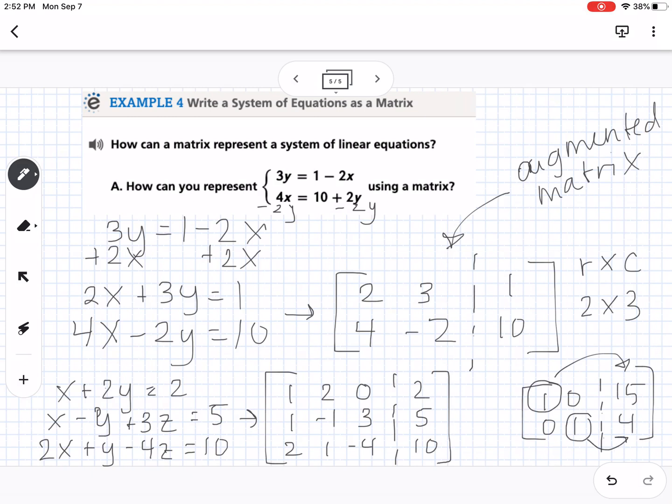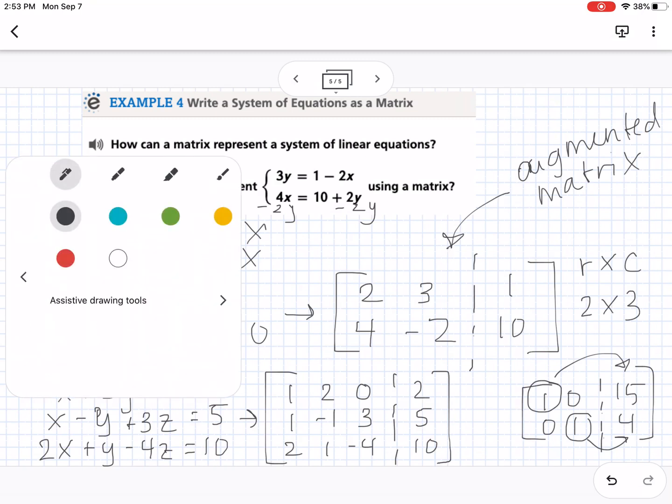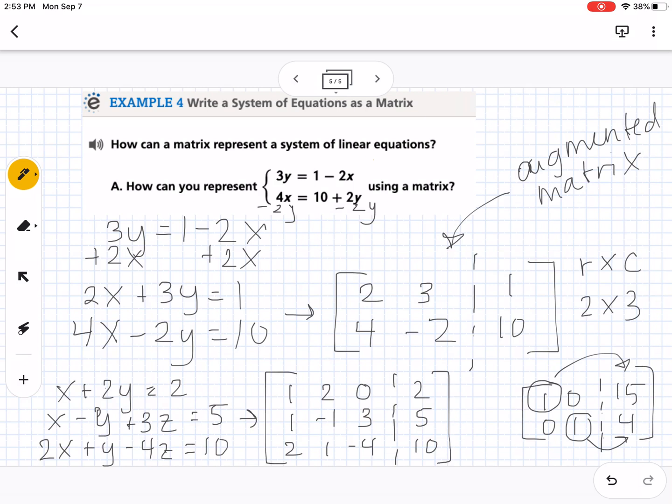In our next lesson, 1-7, we are going to go into how we can use the calculator to do all of this matrix row reduction. But for this lesson, all you need to know is how to take something like this and turn it into a matrix like that. So for 1-6, you're just rewriting systems of equations as matrices. Let me know if you have any questions.